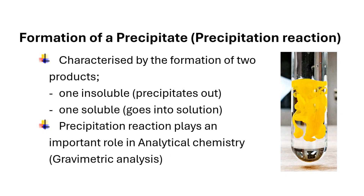A precipitation reaction is characterized by the formation of two products, one of which precipitates out as an insoluble product while the other product goes into solution as a soluble entity. Precipitation reaction is probably one of the most important types of reaction in analytical chemistry. The soluble or insoluble nature of the target substance allows for its convenient separation from the reaction mixture for identification or further analysis.